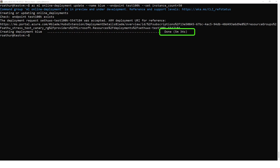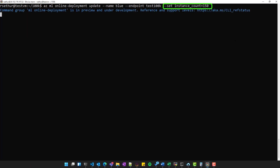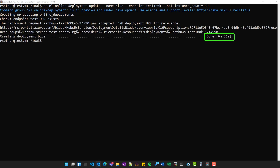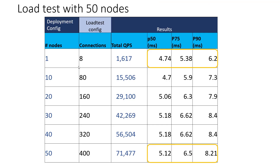In 5.5 minutes we are open for business. Typically this takes somewhere between 5 to 7 minutes. For a quick sidebar: to scale up to 150 nodes, we use the same update command with the instance count as 150, and we are all set within 7 minutes. I ran load tests on not only 50 instances but also on intermediate node configurations. For a single node configuration, the P50 to P90 latencies are between 4.7 to 6.2 milliseconds. For a 50-node cluster, it is 5.1 to 8.2 milliseconds — reasonably close given the scale.